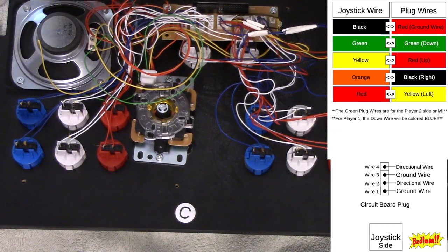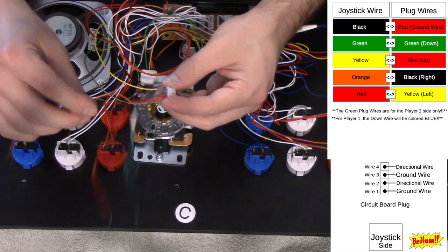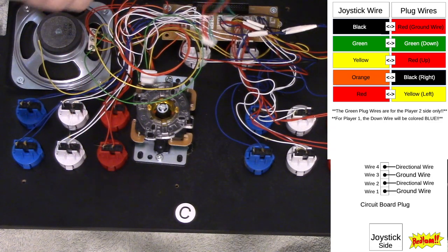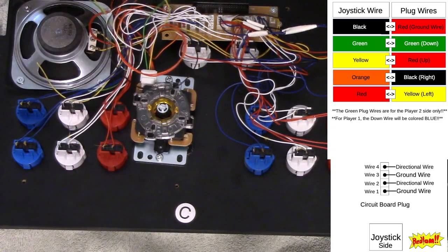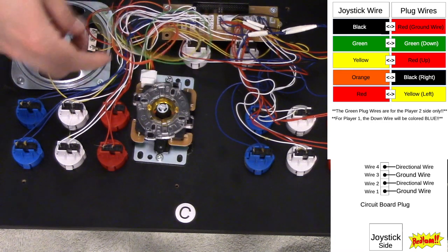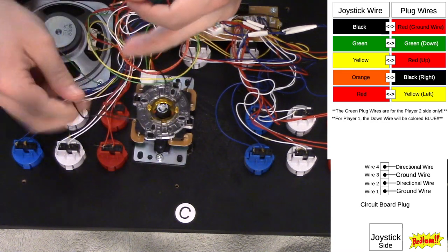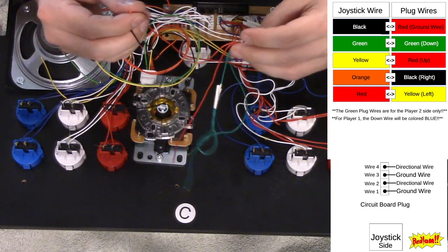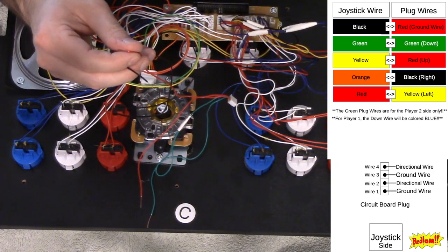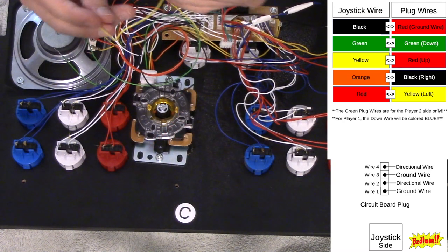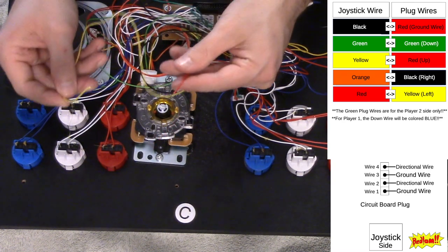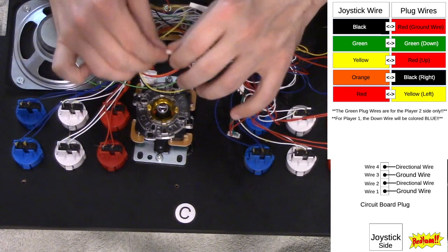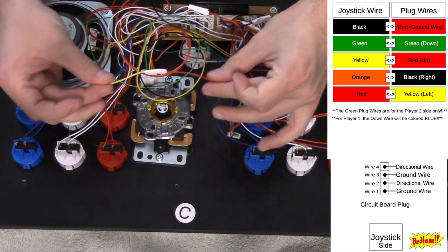The red wire closest to the joystick, which is going to be this one, that one is going to go to your black wire from the joystick because this joystick's black wire right here, that is the ground wire. You're going to take your red ground wire and you're going to match it up with the ground wire for the joystick. Your second red wire, your actual directional wire, is going to go to the yellow wire from the joystick.